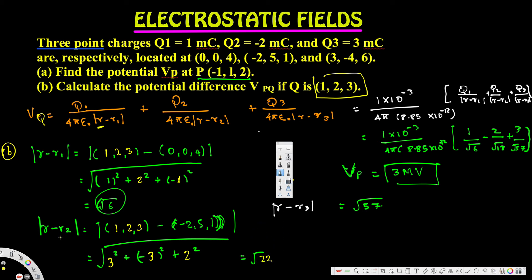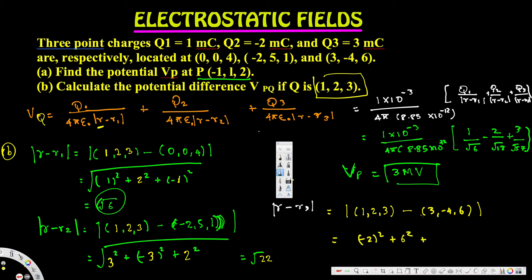For |r - r3| at point Q: (1, 2, 3) minus (3, -4, 6). Subtracting: (1-3)² + (2-(-4))² + (3-6)² = (-2)² + (6)² + (-3)² = 4 + 36 + 9 = 49. So |r - r3| = √49 = 7.